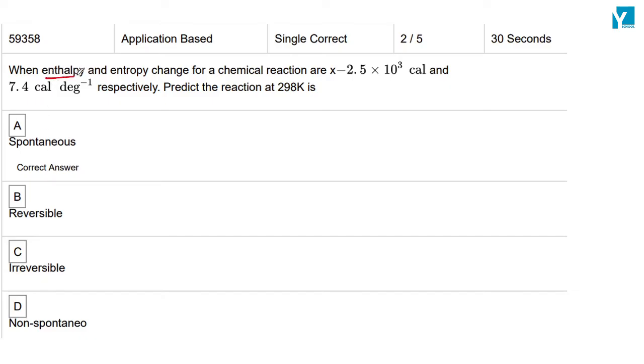The question is: the enthalpy and entropy change for a chemical reaction are -2.5 × 10³ cal and 7.4 cal/degree respectively. Predict the reaction at 298K. We have delta H negative and delta S positive.